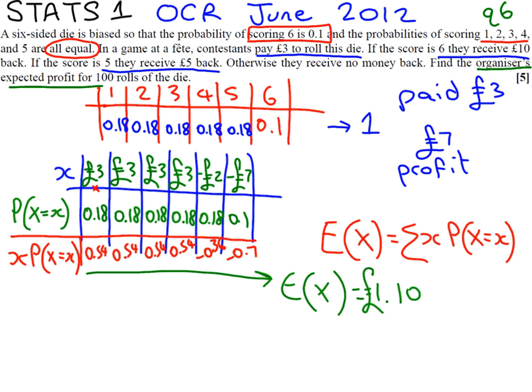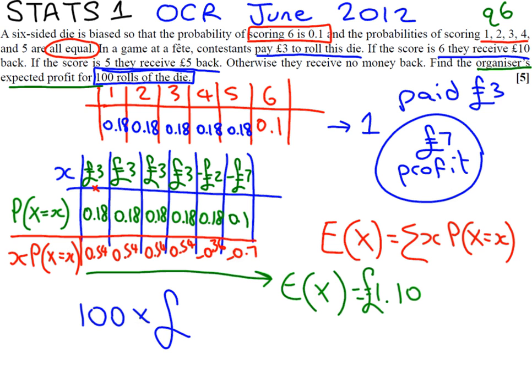So that means the organiser's got to be feeling quite happy. Every time someone plays the game, on average he's going to get £1.10. Obviously he could be really unlucky and keep having to pay out £7, but statistically he expects about £1.10 each time. To finalise the question, we're talking about 100 rolls, so if we do it 100 times it's going to be 100 times £1.10, which gives us a final answer of £110.